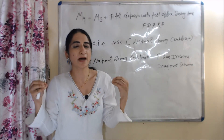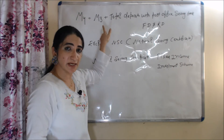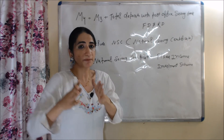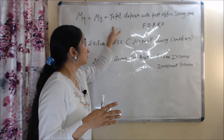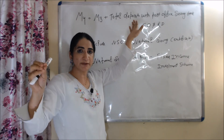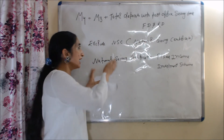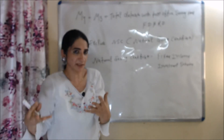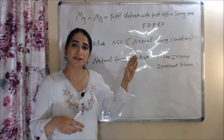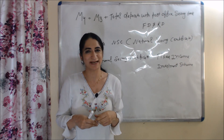Now we talk about the last measure of money supply, that is M4. M4 is equal to M3 plus total deposit with post office saving bank. Don't be confused with M2 — here we are taking total deposit, not only saving deposit. Total deposit with post office saving bank basically includes FD and RD but excludes NSC. NSC is National Savings Certificate, which is a fixed income investment scheme. This is all about measures of money supply — thank you so much for watching. Bye, take care.